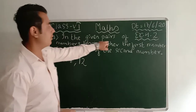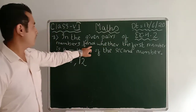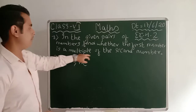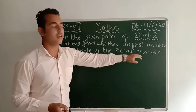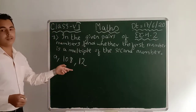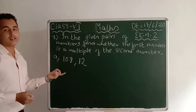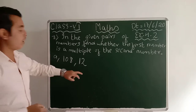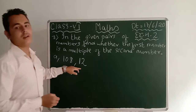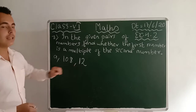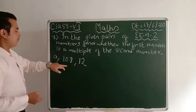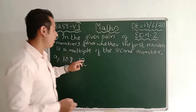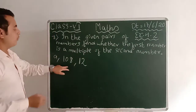Question 7: In the given pairs of numbers, find whether the first number is a multiple of the second number. We have pairs of numbers and we have to check whether the first number is a multiple of the second. For example, is 108 a multiple of 12? We have to check that.